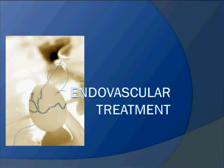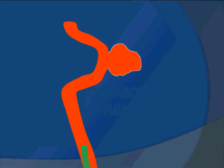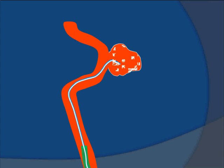Let's talk about the endovascular treatment of aneurysm. It's the most gentle way to treat a very friable aneurysm a few days after rupture. Technically, a guiding catheter is placed into the vessel that supplies the territory where the aneurysm is located. If it is in the right carotid territory, the guiding catheter goes in the right internal carotid artery. Through this catheter, a micro catheter is navigated into the aneurysm with the help of a guide wire, and then multiple coils are gently packed into the aneurysm.